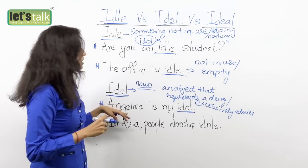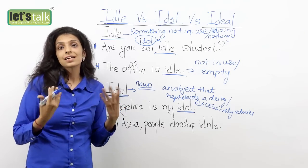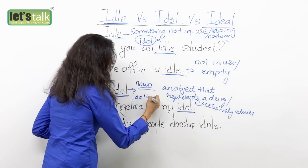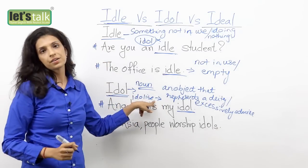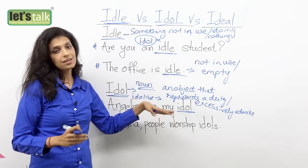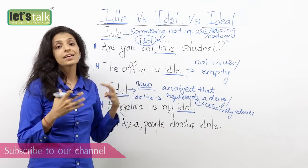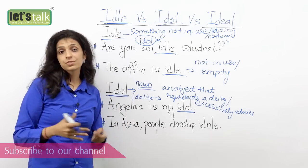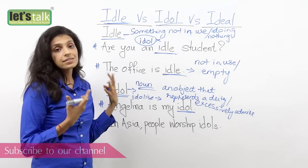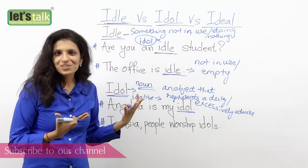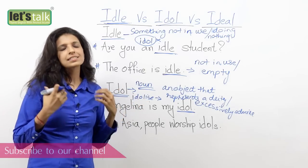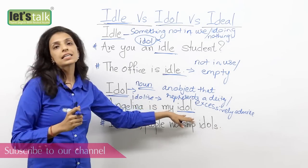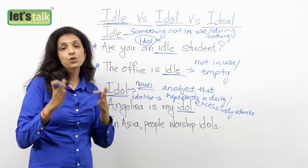Another way to say it — I'm sure you've heard it — we say 'I idolize her.' So we use the word 'idolize,' which becomes a verb, meaning you excessively admire her. But if I say 'she's my idol,' she's the person I really look up to, I excessively admire. I'm sure all of you have your idols. Sometimes it could be your parents — they are your idols, you worship them literally. So when you want to say you excessively admire, worship, or look up to someone, you use the word idol.